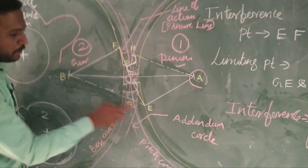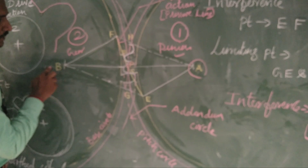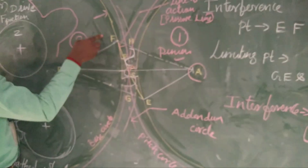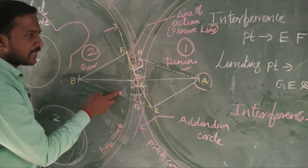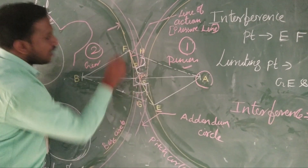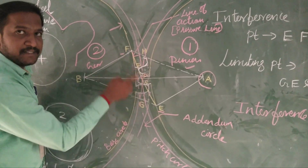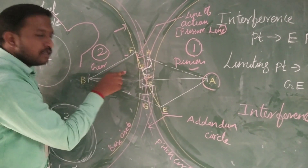I have drawn a base circle for the pinion, shown in this color. Similarly, for the gear, I have drawn a base circle. With the help of these base circles, I am going to draw a tangent line connecting the base circle of the gear as well as the pinion, and there is one condition - it must pass through the pitch point. The line E and F gives that tangent line, which connects the two base circles of gear and pinion.